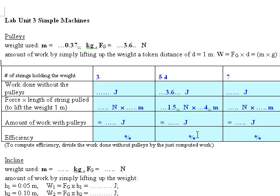Okay, so that comes out to the amount of work with the pulleys of 6.0 joules, 1.5 times 4.